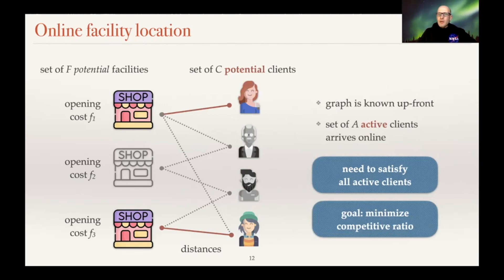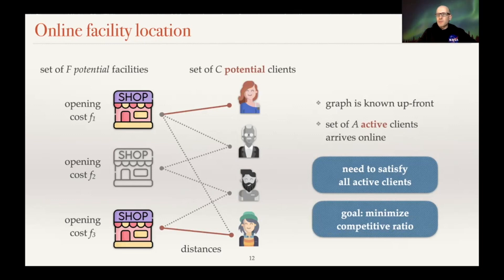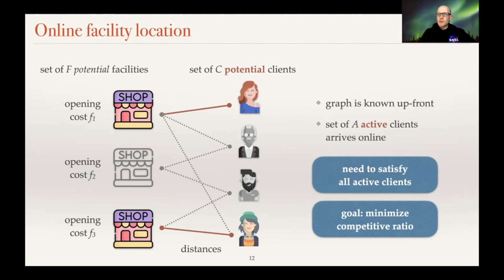We then realize that if we had known the set of clients up front, we could have opened just the first facility and connected both clients to it, probably at a cheaper cost. Our goal is to compare ourselves to the optimal offline solution, and this ratio between our cost and OPT is called the competitive ratio, which we want to minimize.